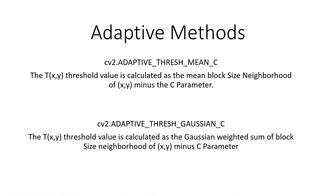There are two types of adaptive methods. The first is cv2.ADAPTIVE_THRESH_MEAN_C, which calculates the mean of the block neighborhood at position (x, y) and subtracts the C parameter. The second is cv2.ADAPTIVE_THRESH_GAUSSIAN_C, which calculates the Gaussian weighted sum of the block neighborhood and subtracts the C parameter. The C parameter is a constant value subtracted from the calculated mean or weighted sum.